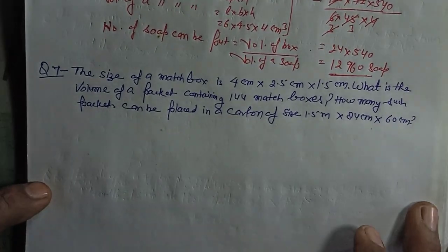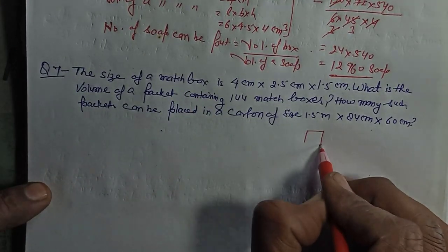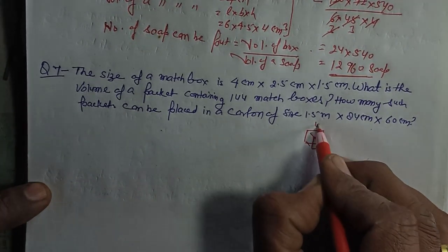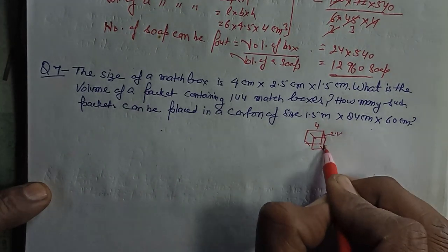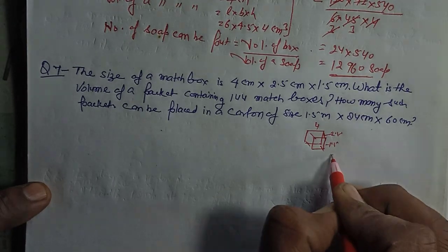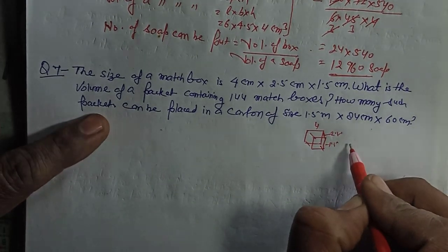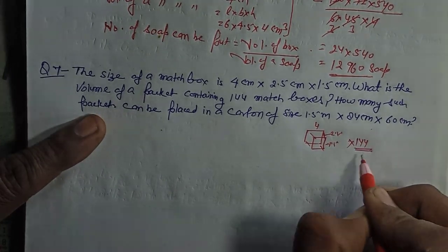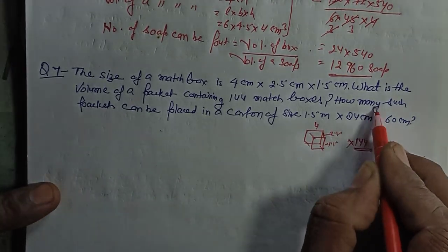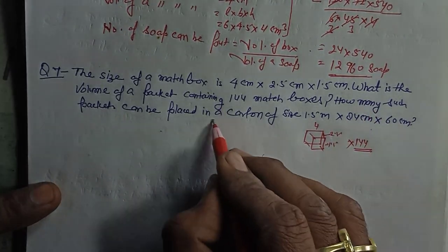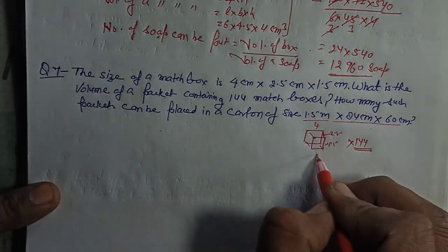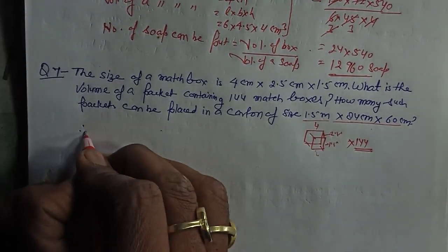Question number 7 is also a very easy question. The size of a match box is given — I'll take it as 4 cm long, 2.5 cm wide, and height 1.5 cm. What is the volume of a packet containing 144 match boxes? And how many such packets can be placed in a carton whose size is given? So the question asks how many match boxes of this type can fit in that carton.